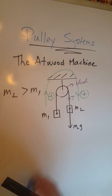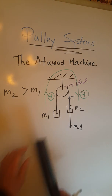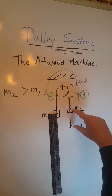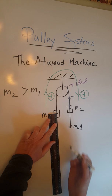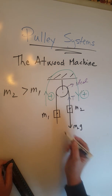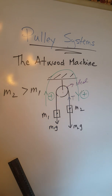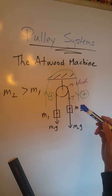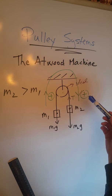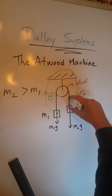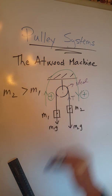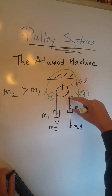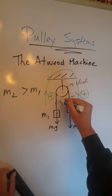Now let's look at the forces on m1 — the same types of forces apply. There is m1g, the force of gravity downward, drawn shorter than m2g since m2 is greater than m1. There is also a tension force on m1. Since there is only one string in this entire pulley system, there is only one tension value. No matter where you measure it, the tension must be the same throughout. So the tension acting on m1 is the same magnitude T, pulling upward along the string.